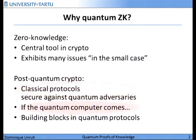If at some point physicists manage to build a quantum computer, we would like cryptography to be ready for it. And on the other side, if we want to build future protocols that make use of quantum cryptography, we also need the classical building blocks to be secure against quantum computers.